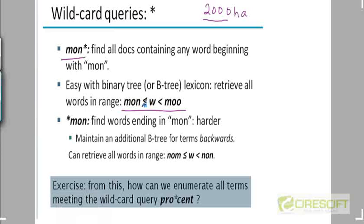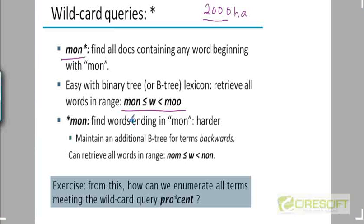Assuming the ordering is defined alphabetically, we can use a B-tree dictionary to collect together all the terms in this range, because they would all be bunched together. We then retrieve the postings list for each of those terms individually and take an OR operation on all the postings lists. That gives you the result.